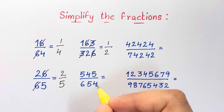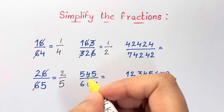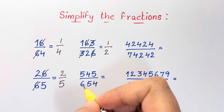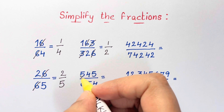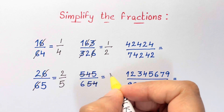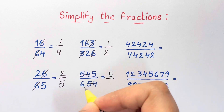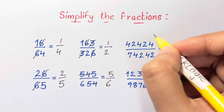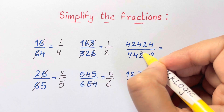For the fourth problem, I couldn't cancel out any 6s, but I could cancel out the 54s, and that would get to the answer of 5 over 6.